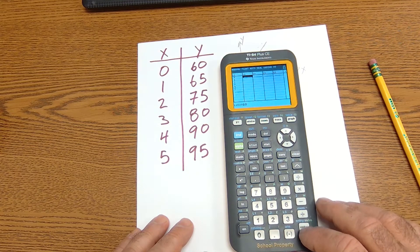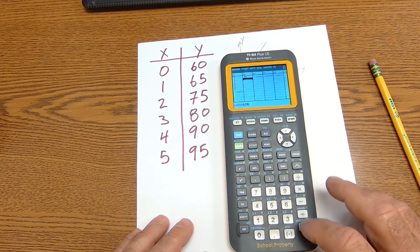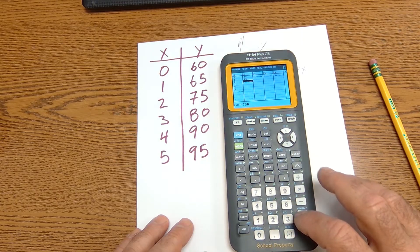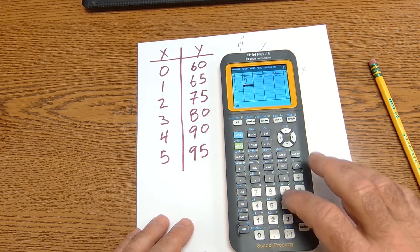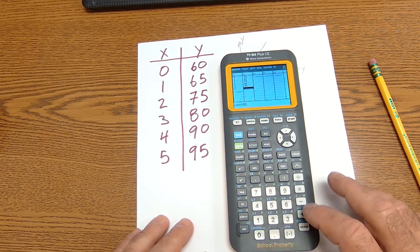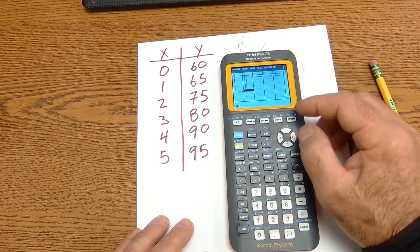Then I'll go over to list two. My scores would be 60, 65, 75, 80, 90, 95.